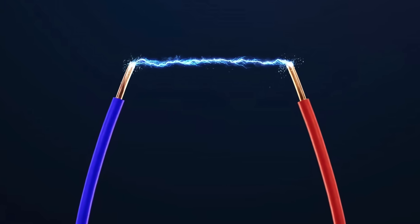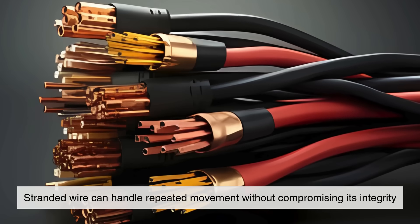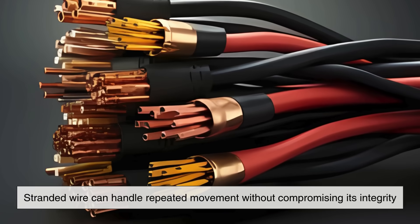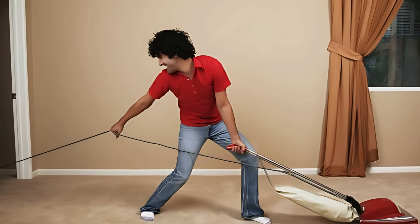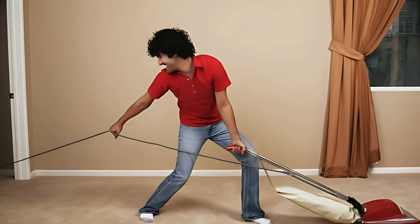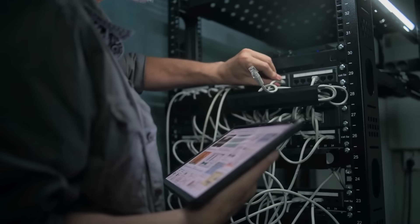Try bending solid wire over and over and you'll eventually see it start to weaken and break. But stranded wire can handle repeated movement without compromising its integrity. This flexibility also makes it easier to pull through conduit or tight spaces, especially when you're dealing with long runs or complex routing.